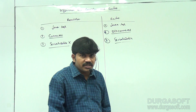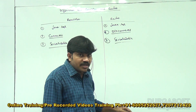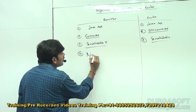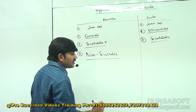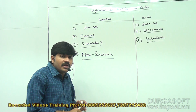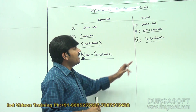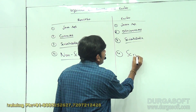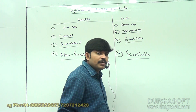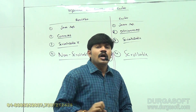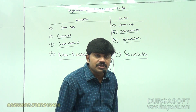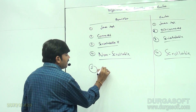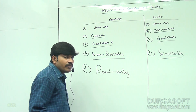By default, ResultSet is non-scrollable — it moves only in the forward direction. But by default, every RowSet including JdbcRowSet is scrollable. You can happily move either in the forward direction, backward direction, or jump to a particular position — that is possible in the case of RowSet.